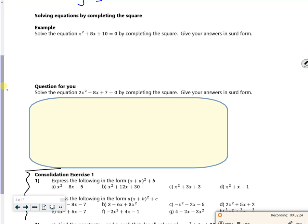Right, let's have a look. So solve equations by completing the square. If I do x plus 4 squared minus 16 plus 10 equals 0, so x plus 4 squared minus 6 equals 0.